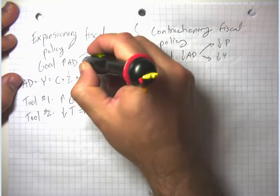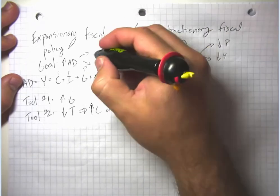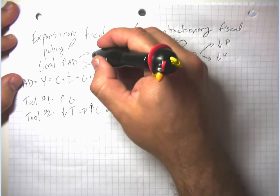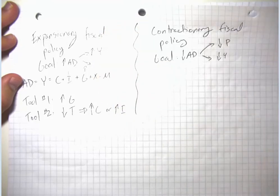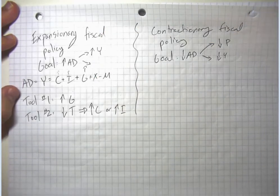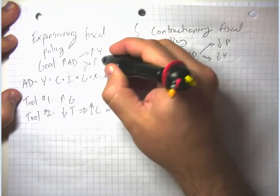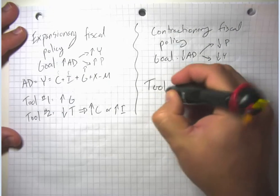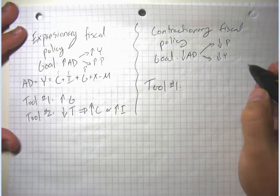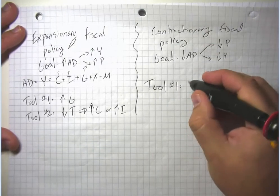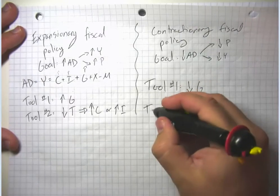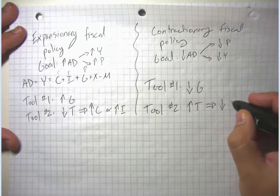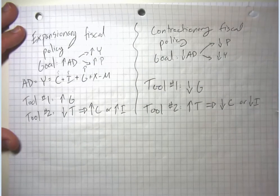With both types of fiscal and monetary policy, we have a beneficial effect on either employment or inflation, but not on both at the same time. An increase in aggregate demand has the advantage of increasing GDP and decreasing unemployment, but the disadvantage of increasing inflation. With contractionary fiscal policy, our tools are the opposite: we can decrease aggregate demand by cutting government spending, or by increasing taxes, which causes people to cut their consumption or possibly their investment spending.